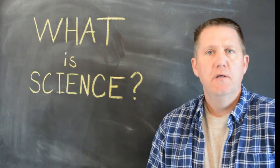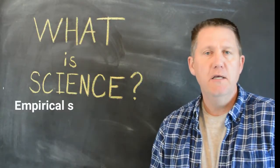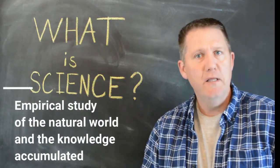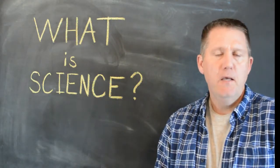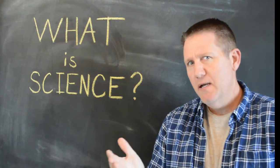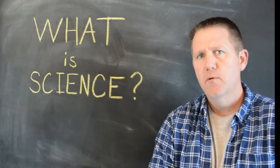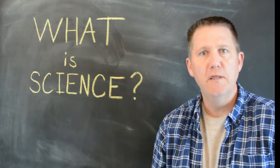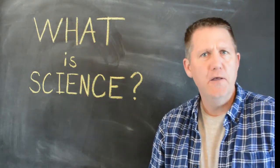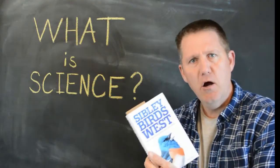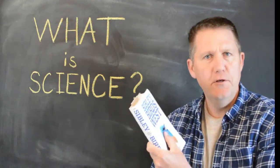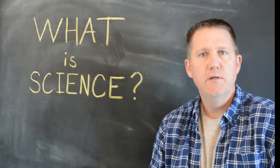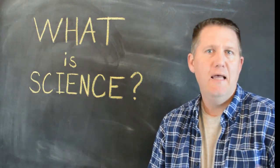My best definition is that it is an empirical study of the natural world and the knowledge that we've accumulated from that study. So it's weird, it's both a noun and a verb. It's kind of how you study the world, the action of doing that, scientific method and all that sort of stuff, and the knowledge that you've accumulated. All these books of scientific knowledge are part of science, so both the knowledge and the methods.